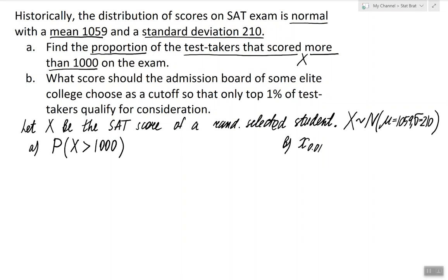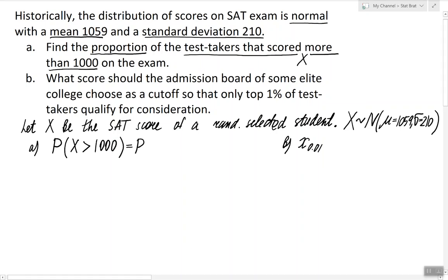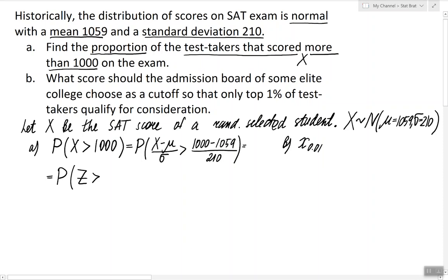These are the two questions, and we can now use all our knowledge about normal random variables. To find the probability of X being greater than 1000, we relate this to the standard normal random variable Z in two steps. Step one: subtract μ and divide by σ on both sides of the inequality, keeping letters near letters and numbers near numbers — subtracting 1059 and dividing by 210 on the right-hand side. Step two: replace (X − μ)/σ with Z and compute the right side, which gives 0.28.